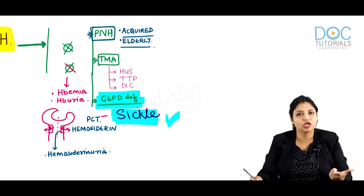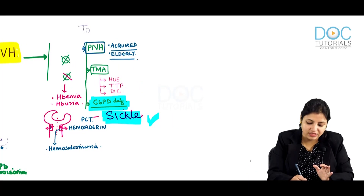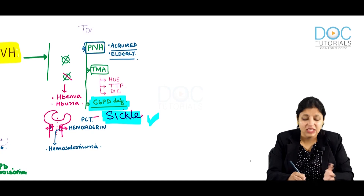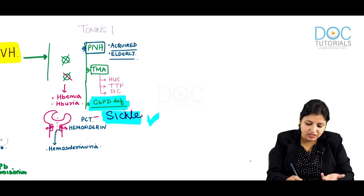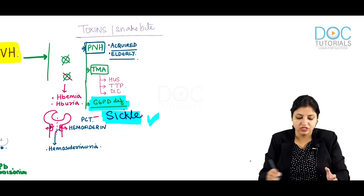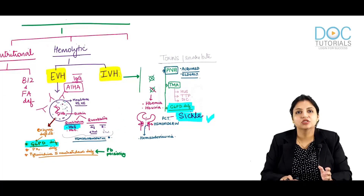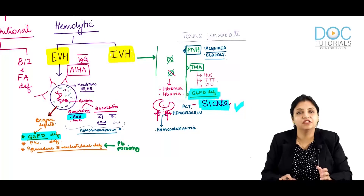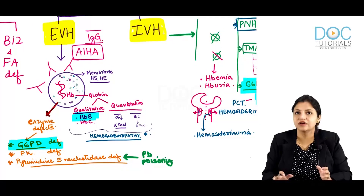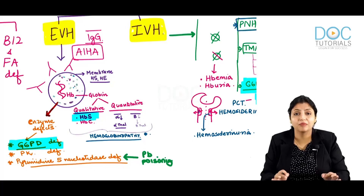So to summarize intravascular causes: PNH, thrombotic microangiopathies, G6PD deficiency, sickle cell sometimes, and certain toxins and poisons such as snake bites. Clinical features help differentiate: any hemolytic anemia presenting with hemoglobinuria, hemosiderinuria, and back pain is intravascular.